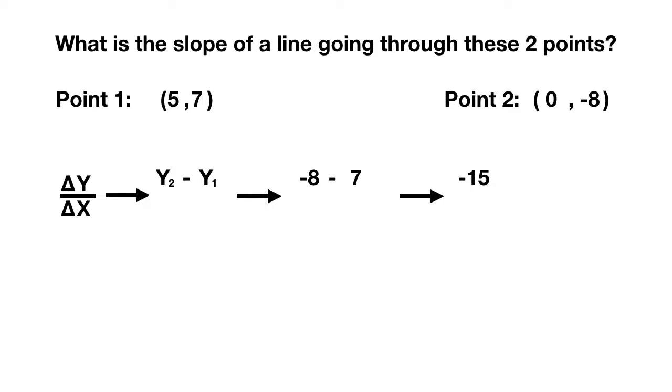Now let's find our change in x by doing x2 minus x1. Here x2 is equal to 0, and x1 is equal to 5. 0 minus 5 gives us negative 5. Then you take negative 15 and divide it by negative 5 to get a slope of 3.